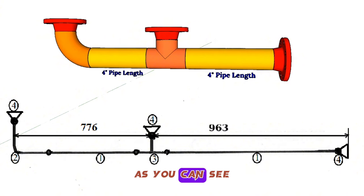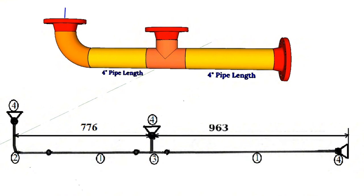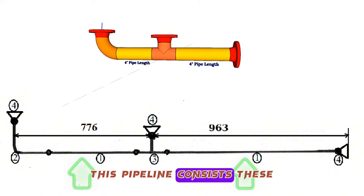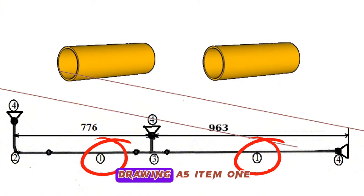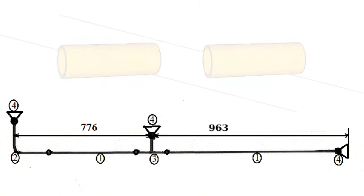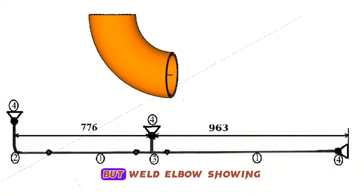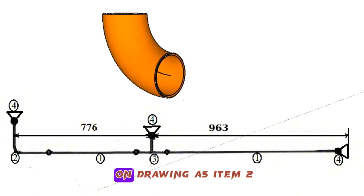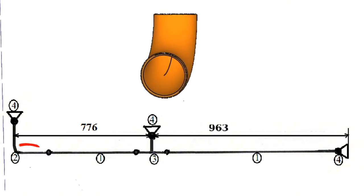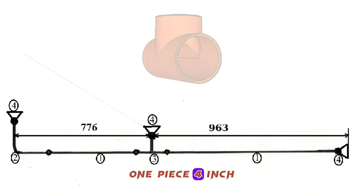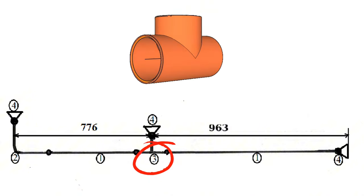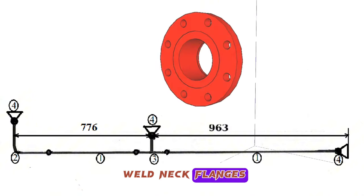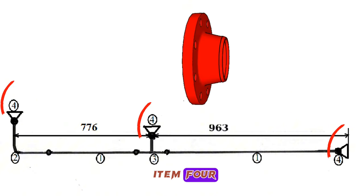As you can see, this is an isometric drawing of a 4-inch pipeline. This pipeline consists of these pipe fittings: 2 off 4-inch pipe pieces shown on the drawing as item 1, 1 off 4-inch 90-degree butt weld elbow shown as item 2, 1 piece 4-inch equal pipe tee shown as item 3, and 3 off 4-inch weld neck flanges shown as item 4.